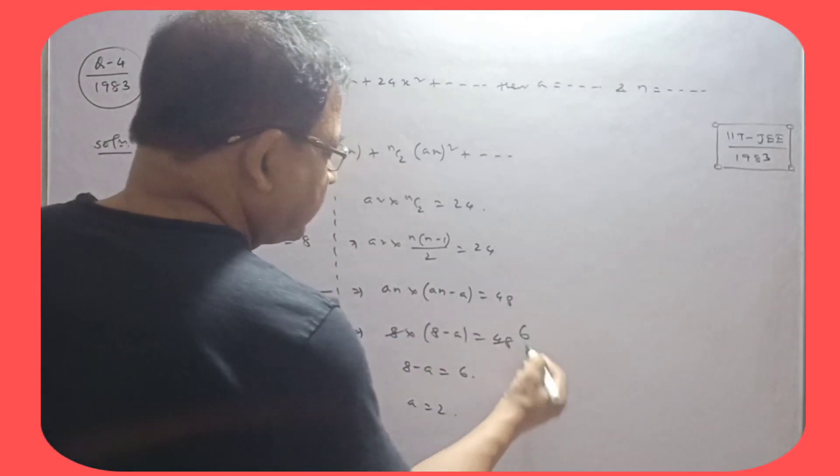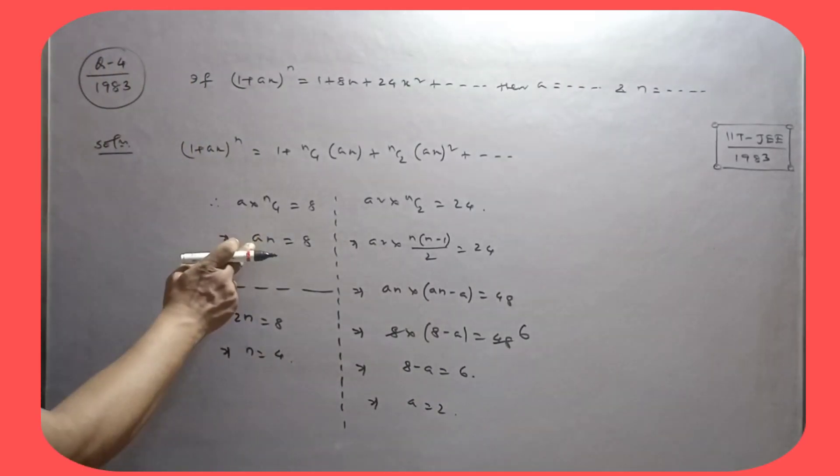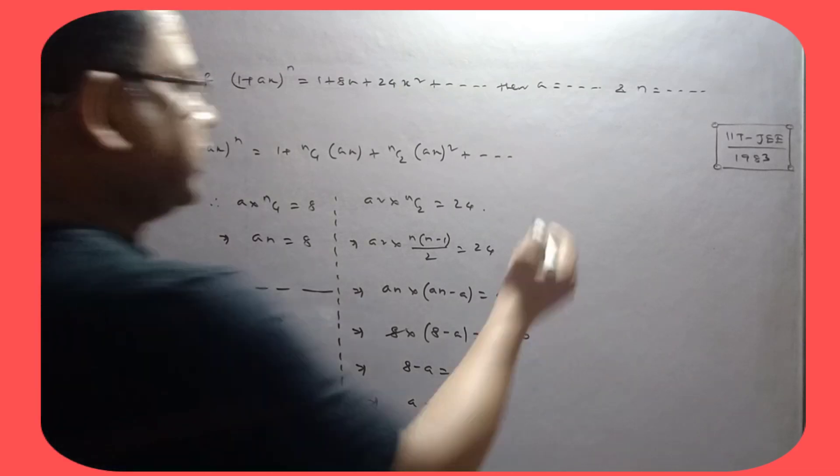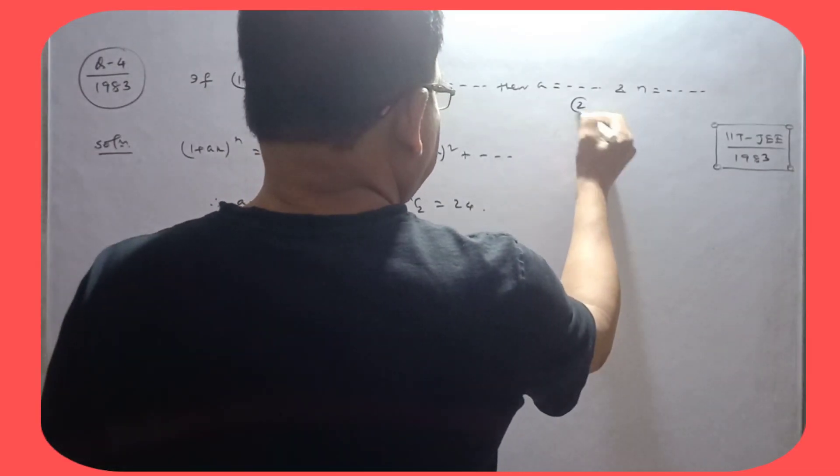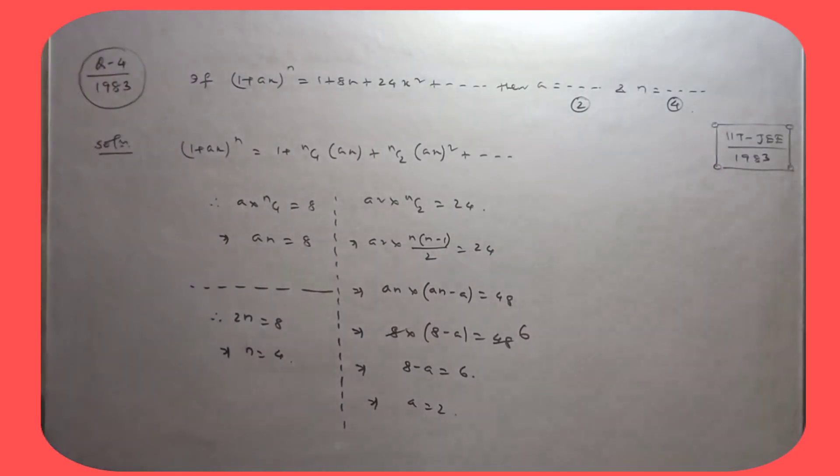When 8 plus 48 cancels, this gives a equals 2. Put this back to get n equals 4. Therefore, a is equal to 2 and n is equal to 4.